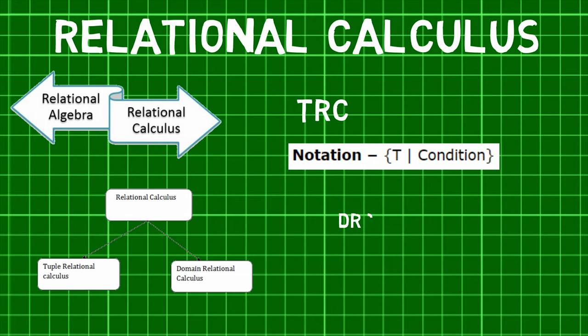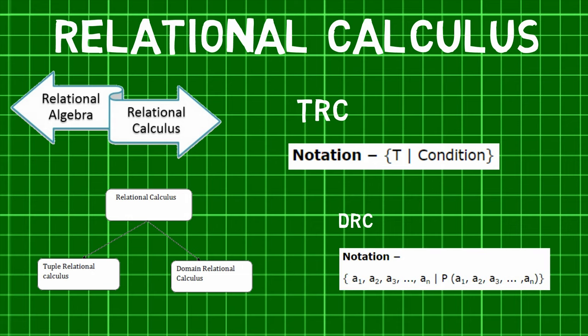Second comes domain relational calculus, or DRC. In DRC, the filtering variable uses the domain of attributes instead of entire tuple values. It has this notation where A1, A2 are attributes and P stands for formulae built by inner attributes.